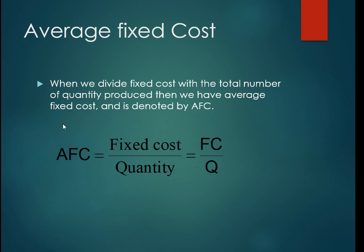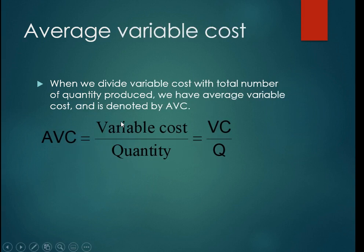Now we will discuss average variable cost. Variable cost is the cost which changes with change in output. When we divide variable cost by the number of quantity, we get average variable cost.